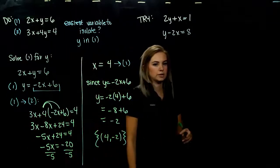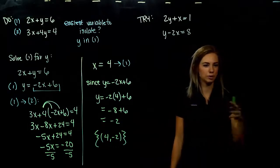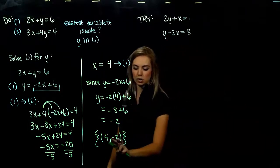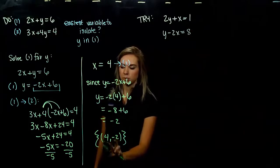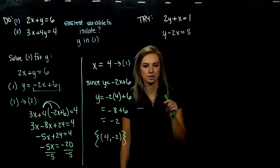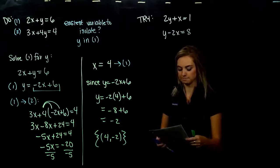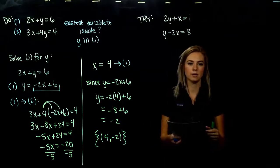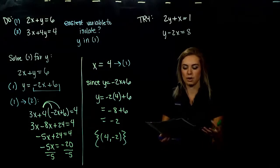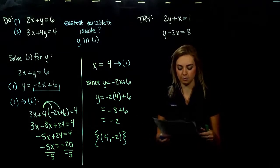Whenever we go to solve these, there's generally an easiest route — don't make more work for yourself. And how can we always check these? Plug them back into our original equations and make sure we satisfy both at the same time. Here are two more for you to try — go ahead, try to take the easier route, but there are lots of different ways to solve these.